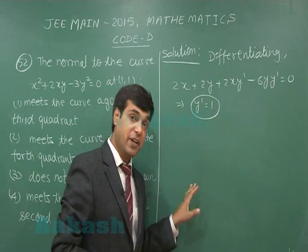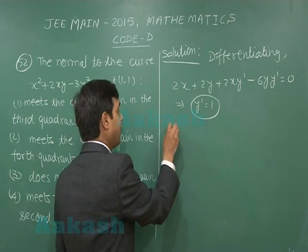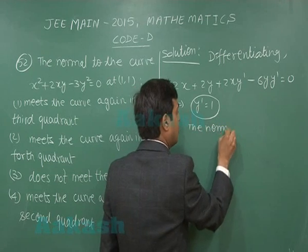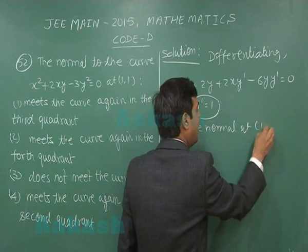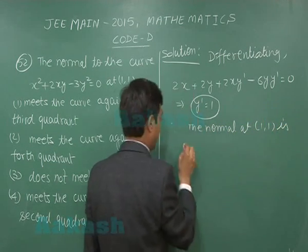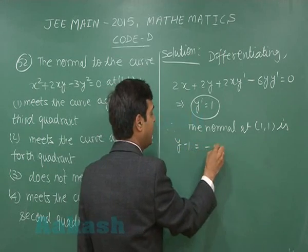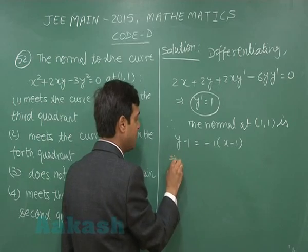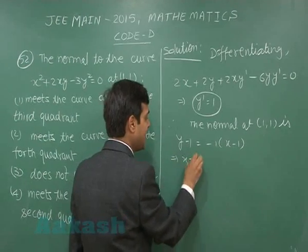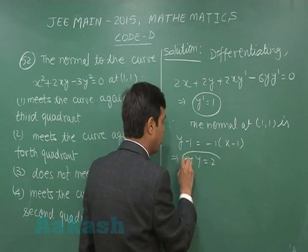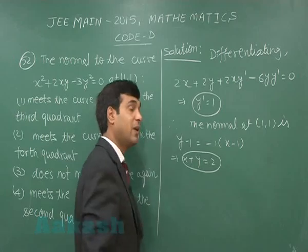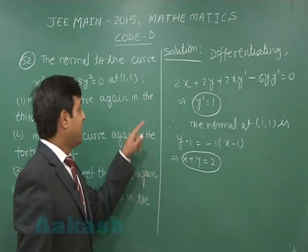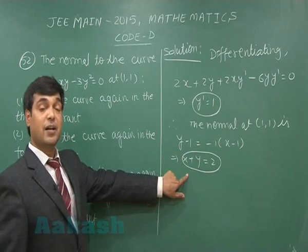The slope of the normal will be −1. We calculate the normal at (1,1) as y − 1 = −1·(x − 1), or simply x + y = 2. This is the equation of the normal at (1,1).